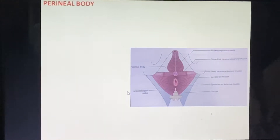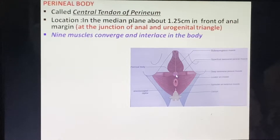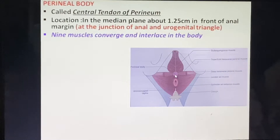The perineal body is called the central tendon of the perineum. Its location is in the median plane, about 1.25 centimeters in front of the anal margin, at the junction of the anal and urogenital triangle — at the junctional point in the midline.